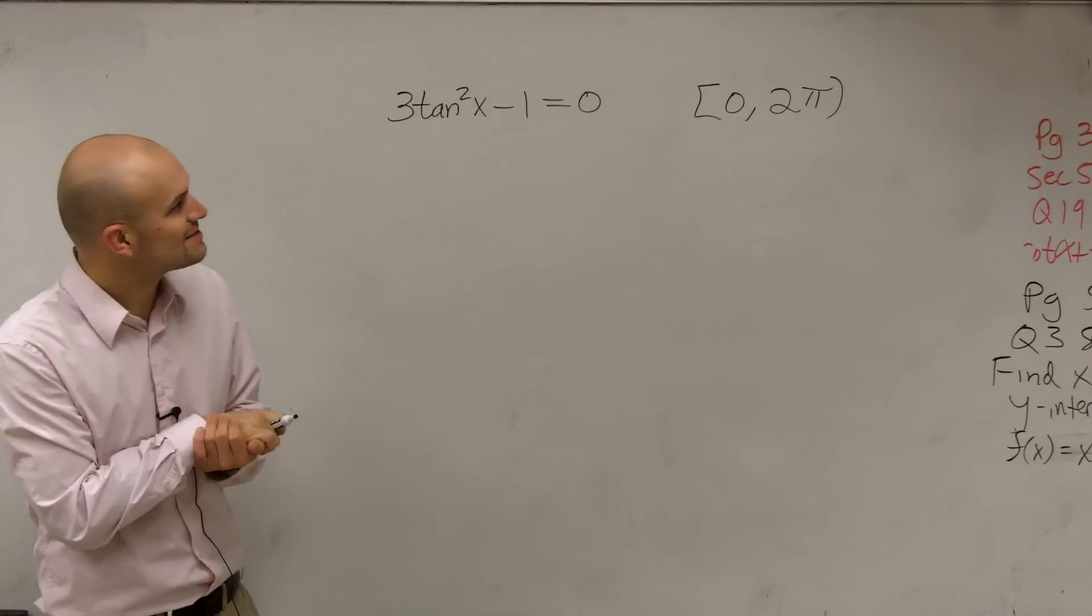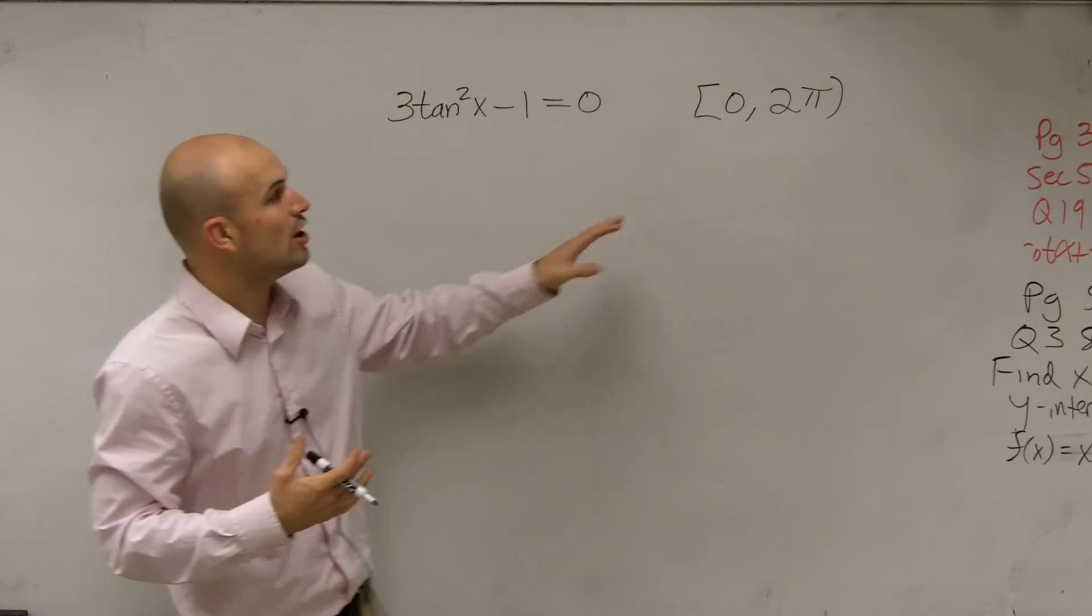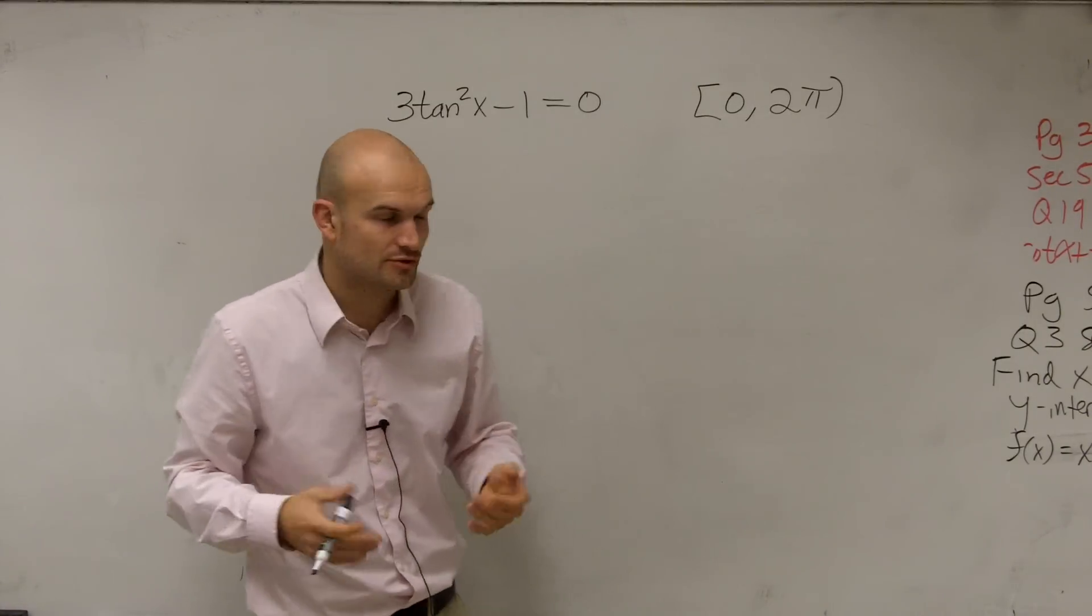So now we have 3 tangent squared of x minus 1 equals 0. And what we're going to do is solve on the interval of 0 to 2π.